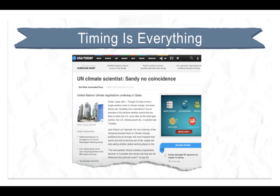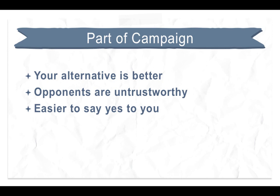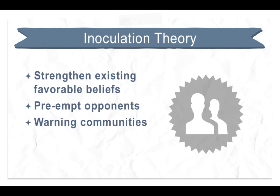Resist the temptation to run to the media with your discovery of stealth lobbying. Instead, ask yourself what would be accomplished if the story ran tomorrow, next week, next month, or in six months. When will policymakers be making a key decision on your issue? Would your story come from out of nowhere and lose its significance, or would it be drowned out by coverage of another event? Exposing stealth lobbying is only useful if it's part of a well-organized, multi-layer campaign that's trying to advance a policy goal. The purpose of revealing your opponent's untrustworthy behavior is to cast doubt on their claims and give your allies more to work with. If you're not constantly out in the community spreading your message, rest assured that the stealth lobby is — and it's their message that will flourish instead of yours.